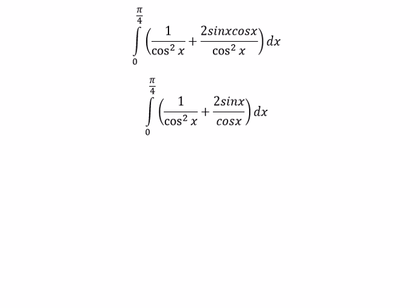And now we can get the final answer. The integral of 1 over cosine x square, you got about tan x. The integral of 2 sine x over cosine x, you got about negative 2 ln of the absolute value of cosine x.